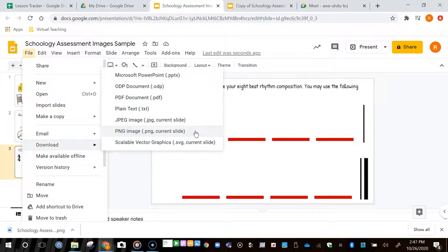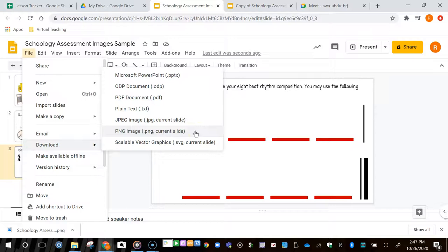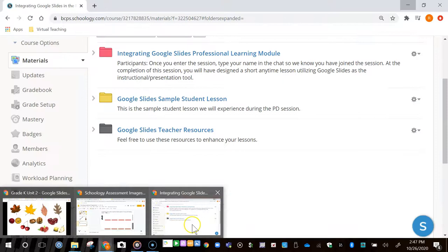After I've downloaded my PNG image to my computer, I can go to Schoology and create an assessment. I'm going to go to Add Materials, Add Assessment.